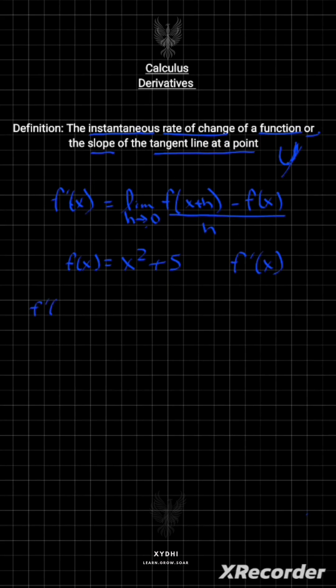The derivative of f(x) equals the limit as h approaches zero of [(x+h)² + 5 - (x² + 5)] / h.